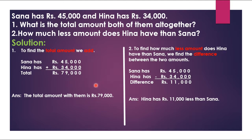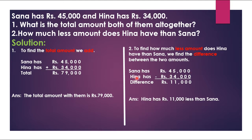Now part two: Sana has rupees 45,000 and Henna has rupees 34,000. How much less amount does Henna have than Sana? To find how much less amount Henna has than Sana, we find the difference between the two amounts. We write down the statement: Sana has rupees 45,000 and Henna has rupees 34,000.